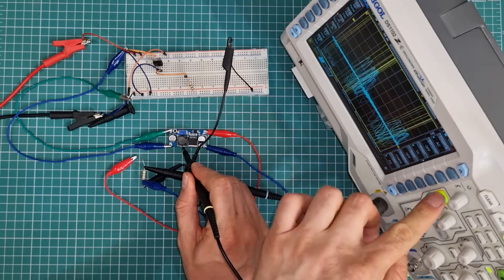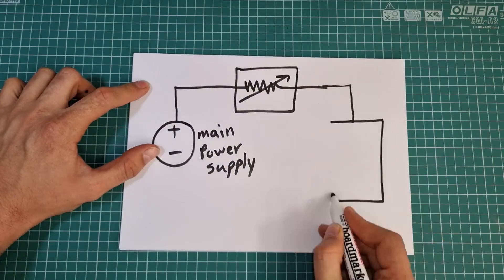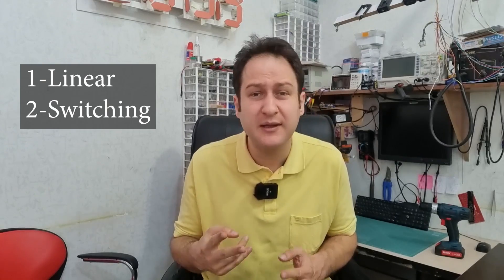My progress in electronics started when I began using various regulators in my circuit design. Voltage regulators are very important components and they are an integral part of professional and stable circuit design. You as a circuit designer must be careful when selecting the right regulators. If not, your project will not work fine and it will face many problems.